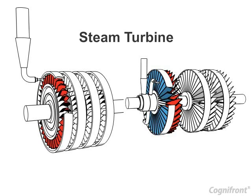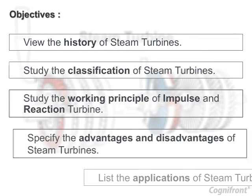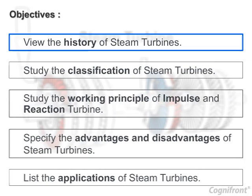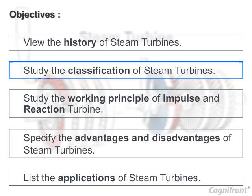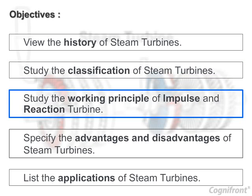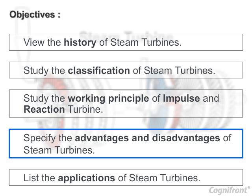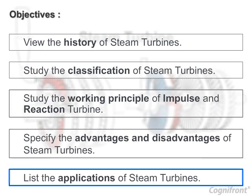Steam turbines: objectives. In this session we will view the history of steam turbines, study the classification of steam turbines, study the working principle of impulse and reaction turbines, specify the advantages and disadvantages of steam turbines, and list the applications of steam turbines.